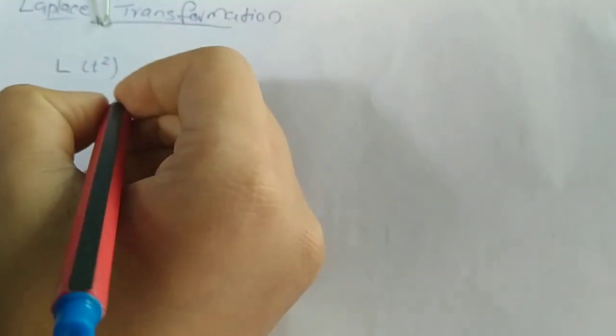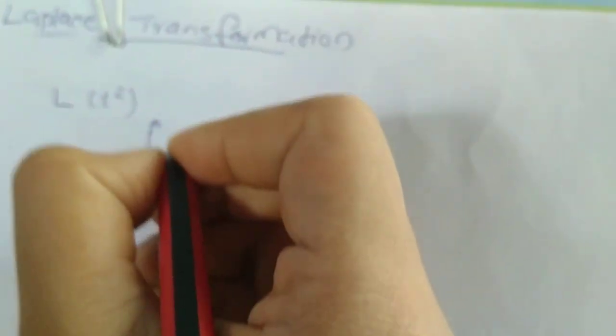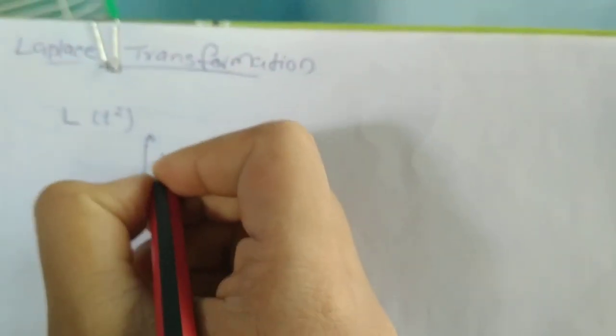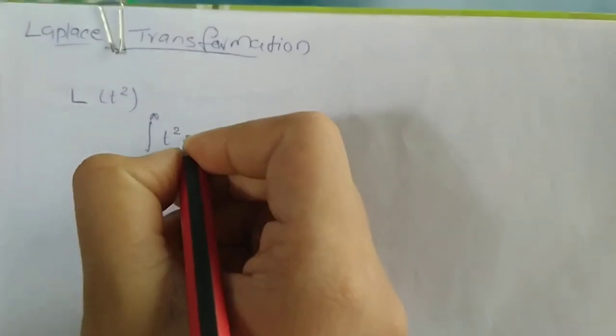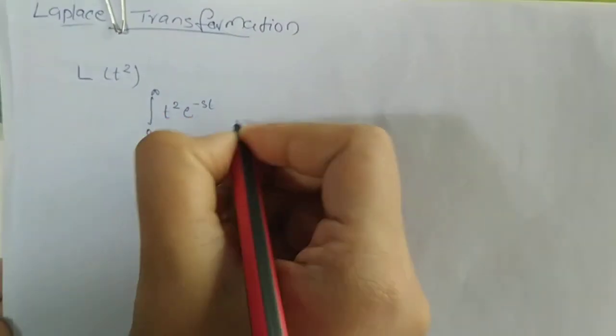We will find the Laplace transform of t squared. We have L{t²} equal to the integral from 0 to infinity of t squared e raised to minus st dt.